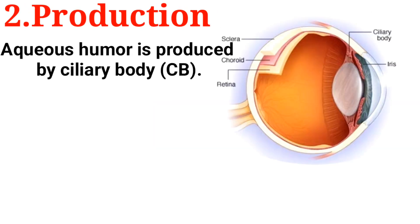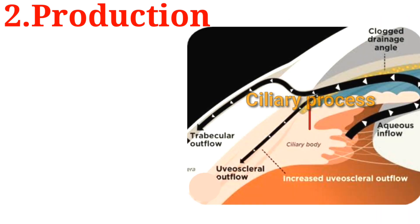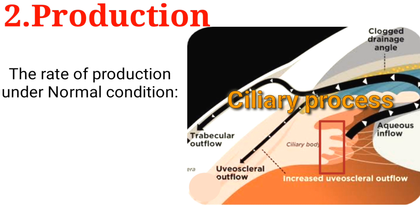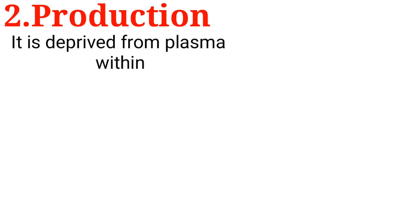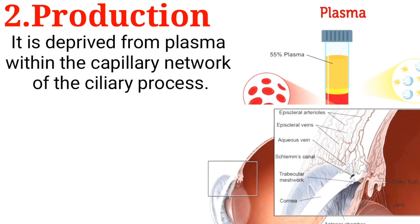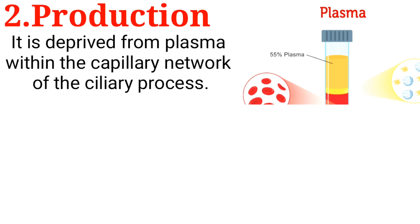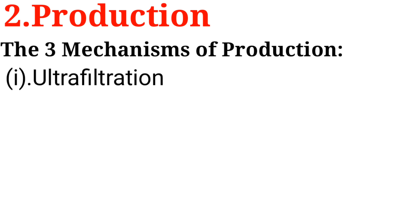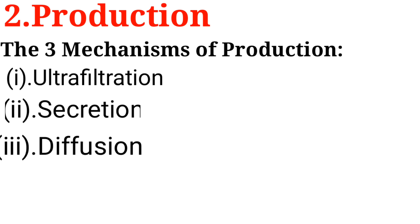Production. Aqueous humor is produced by the ciliary body. The part of the ciliary body responsible for the production is the ciliary process. The rate of production under normal conditions is 2.3 microlitres per minute. It is derived from plasma within the capillary network of the ciliary process. The three mechanisms of production are ultrafiltration, secretion, and diffusion.